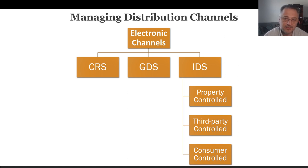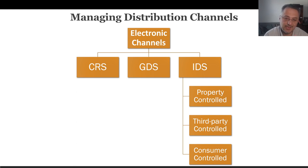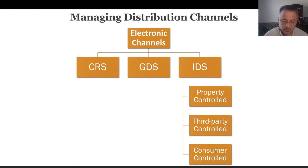The majority of you were born into the internet era and don't know times without it. More than 50–60% of people go online for searching or booking rooms. There are many challenges but also opportunities with using IDS — Internet Distribution Systems — as distribution channels. We can divide IDS into three major approaches. The first is property-controlled sites, where web addresses and content are 100% controlled by the hotel's management team.